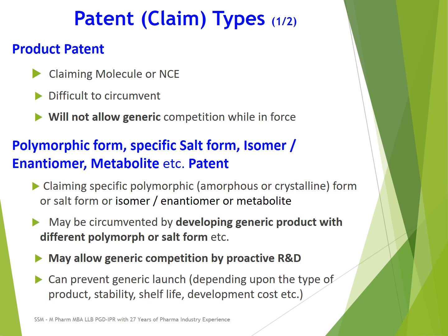Through proactive R&D, a generic company may develop an alternative form of the product — a different polymorphic, crystalline, or amorphous form, or a different salt form. For example, if the patented form is a potassium salt, the generic company may develop the sodium salt form instead, thereby circumventing these patent claims.